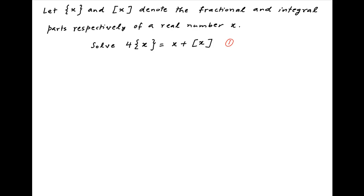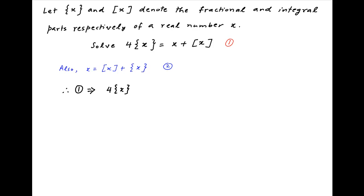We are given that 4 times the fractional part of x is equal to x plus the integral part of x — let's call that equation 1. Now, x is equal to the integral part plus the fractional part of x — let's call that equation 2. If we substitute equation 2 into equation 1, we get 4 times the fractional part of x.